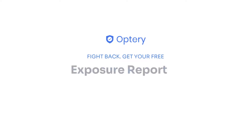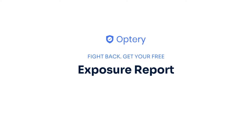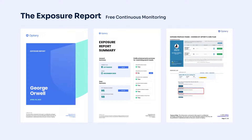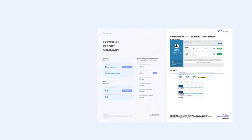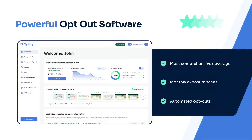That is why Opturi offers the free exposure report. The exposure report shows screenshots from sites that have your data, with links to let you see that data right on the site. Use the exposure report and our how-to guides to opt yourself out for free, or sign up for an Opturi paid plan. Opturi will handle the monitoring and removals for you and your family members.